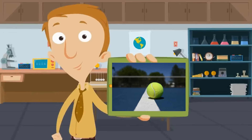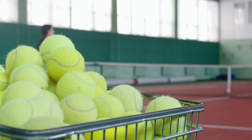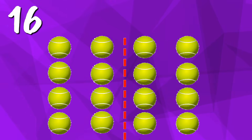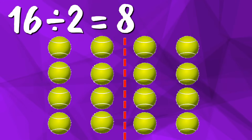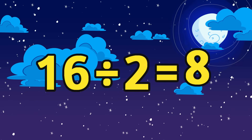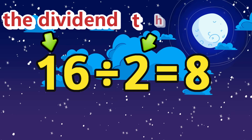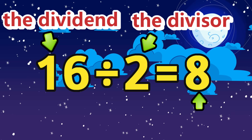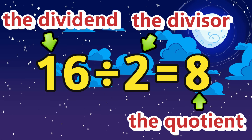The next example is from the world of tennis. Let's say there are a total of 16 tennis balls and two tennis players want to split them up. 16 divided by two will tell us how many tennis balls each player will get. What is 16 divided by two? Yeah, eight. There are eight tennis balls in each of these two groups. 16 divided by two equals eight. The dividend is 16, the divisor is two, and the quotient is eight.